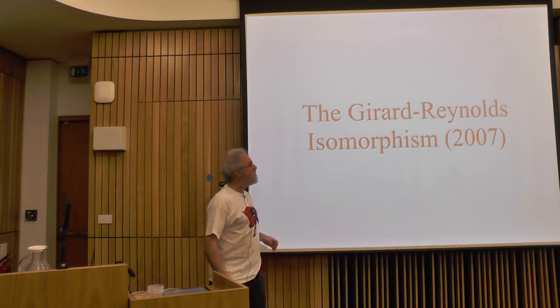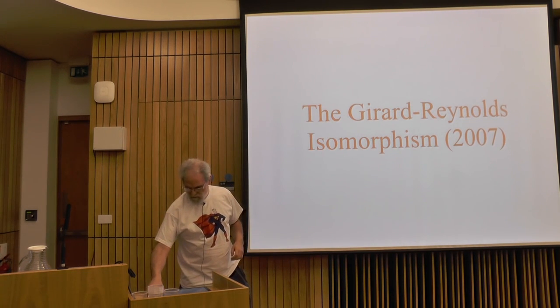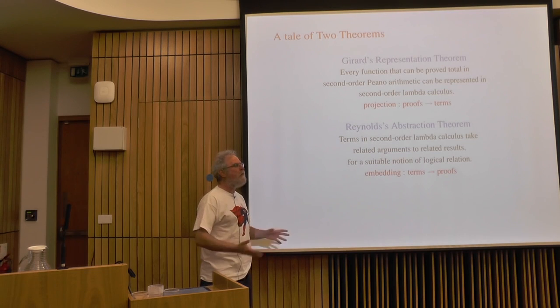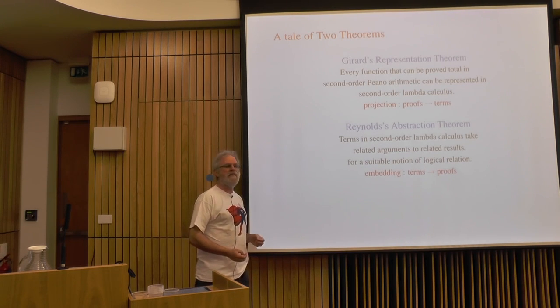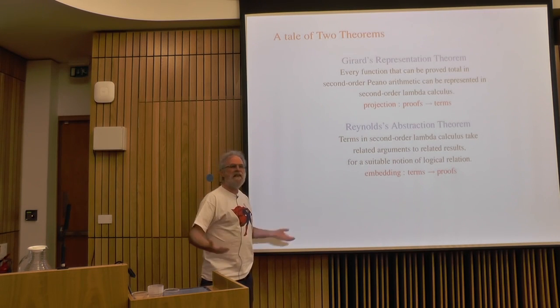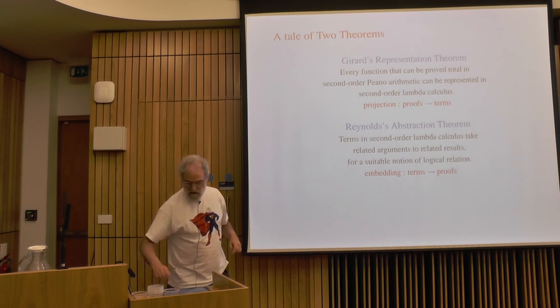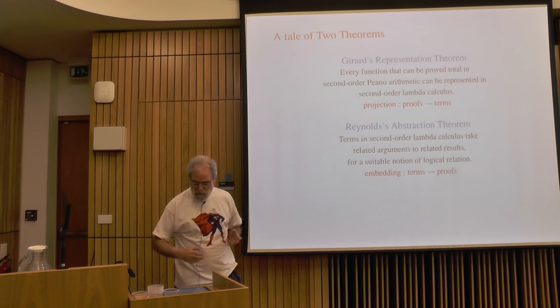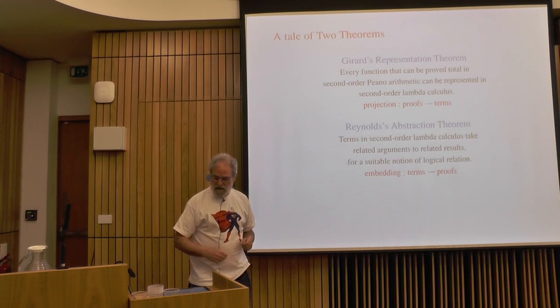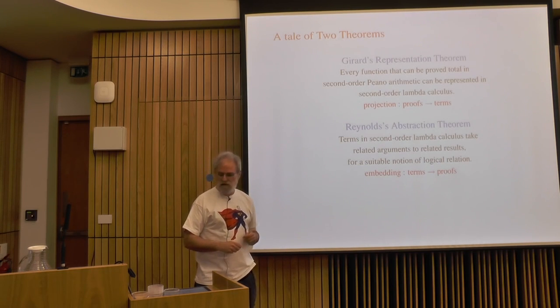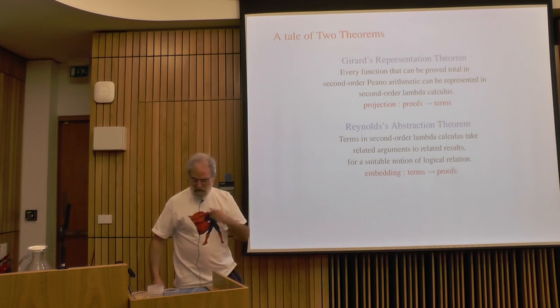I'm going to talk about three things. One is called the Gerard-Reynolds Isomorphism, based on confirming something that many people observed. The representation theorem says that every function that can be primitive recursive in second-order Peano arithmetic can be represented in second-order lambda calculus. If you look at the proof, it really involves taking a proof that something is total and turning it into a term of second-order lambda calculus that computes that thing. So it's a projection function from proofs into terms.